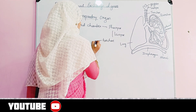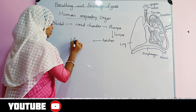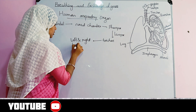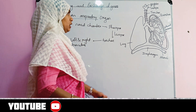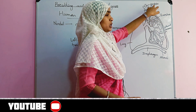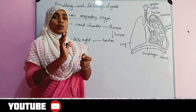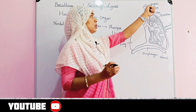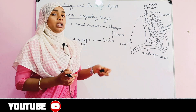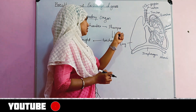The next structure is the larynx, which is also a sound-producing structure, a sound box. Then there is a structure called the epiglottis. The epiglottis is a flap-like structure which covers the glottis part just above the larynx. It prevents the entry of food into the larynx.